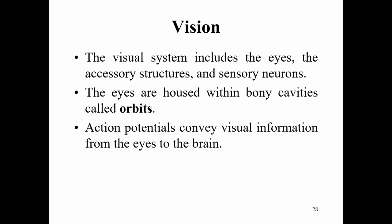The visual system includes the eyes, accessory structures, and sensory neurons. The eyes are housed within bony cavities called orbits. Action potentials convey visual information from the eyes to the brain.